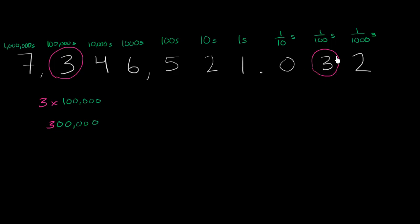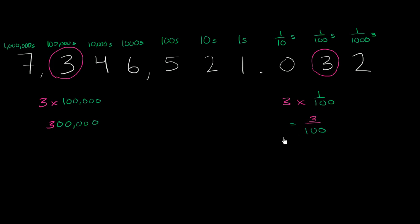Now, what does this other 3 represent? It's in the hundredths place. It literally represents three hundredths — three times one over a hundred, which is the same thing as three over a hundred, which is the same thing as 0.03. These are all equivalent statements.